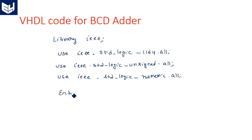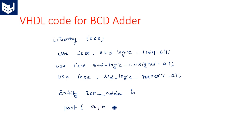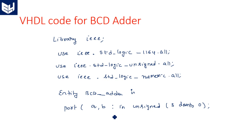Now for the entity: 'entity BCD_adder is port'. You should not split the name of the entity into two words — it is a single word. We declare 'a, b: in unsigned(3 downto 0)'. Here we are taking a and b as unsigned numbers instead of STD_logic, because whenever we are performing addition it should be clearly understood that these two numbers are unsigned binary.